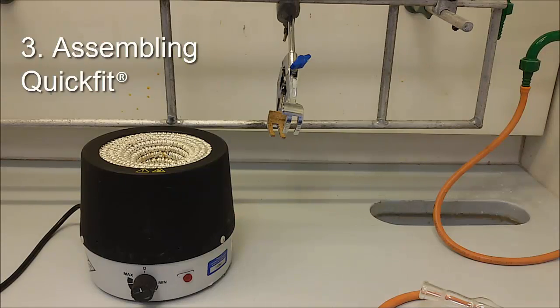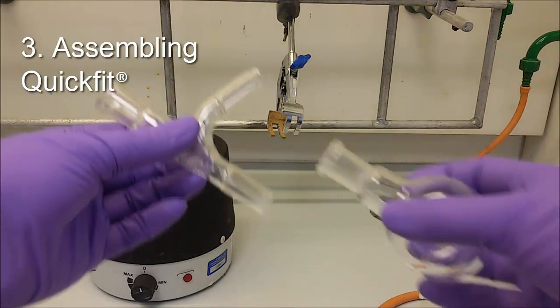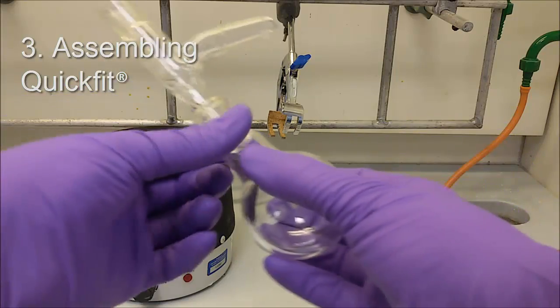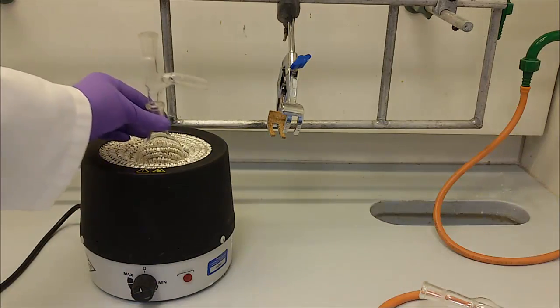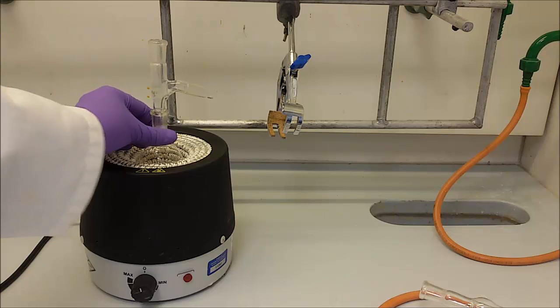Take a 50 ml round bottom flask and fit to the right adapter. Place them in the heating mantle and convince yourself that the mantle gives a firm stability to the flask.